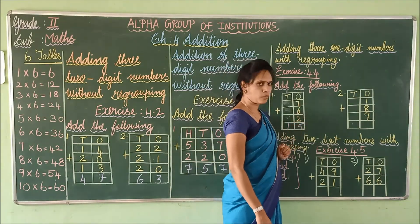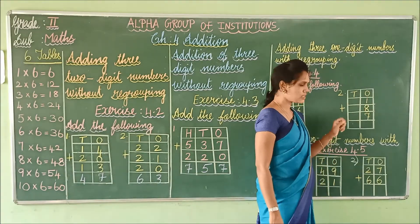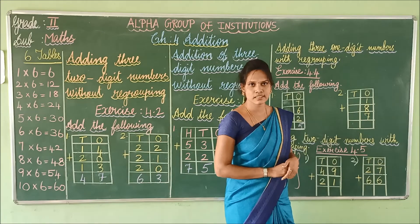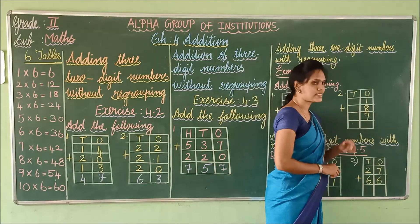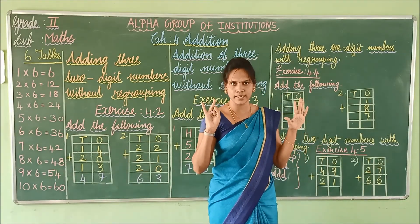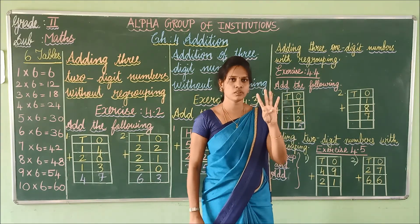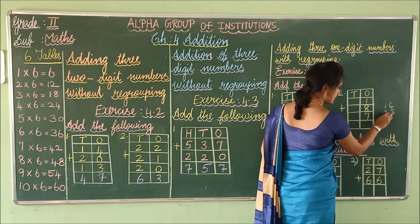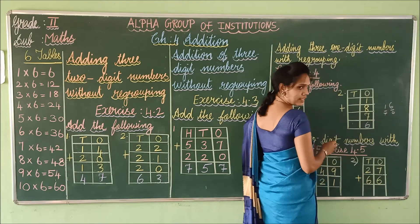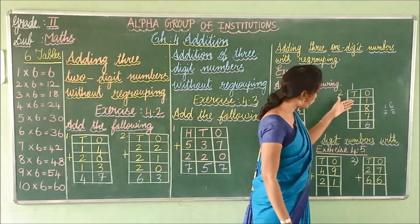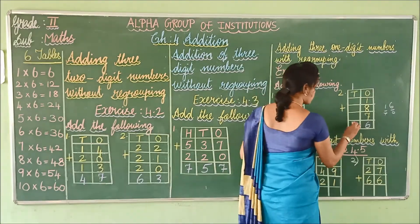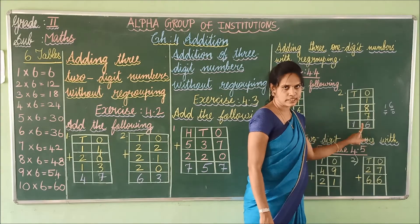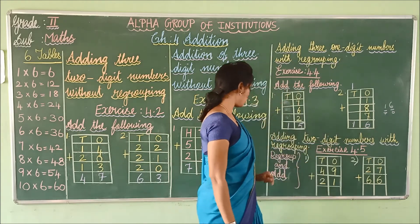Now we move on to the second problem. In the 1s place: 1 plus 8 is 9. Then 9 plus 7 — 9 in the mind, take 7 fingers: 10, 11, 12, 13, 14, 15, 16. So 16. The 6 goes in the 1s place and the 1 is carried over to the 10s place. Since the 10s place is also empty, the carry-over 1 goes straight down. So 1 plus 8 plus 7 is equal to 16. This is the final answer.